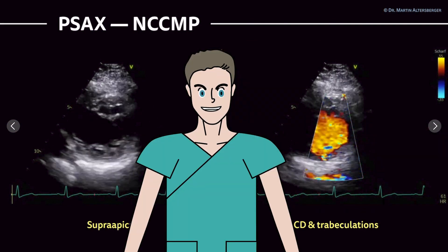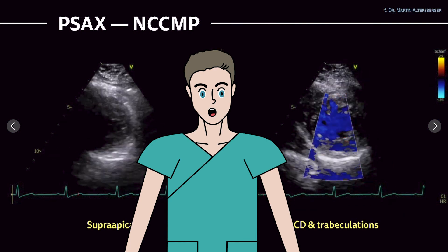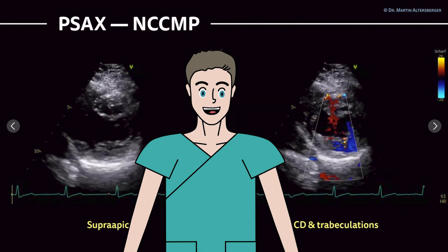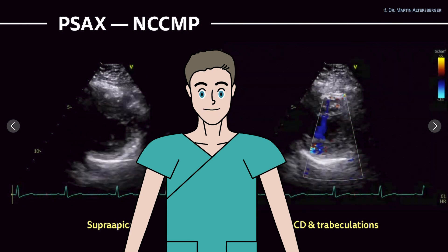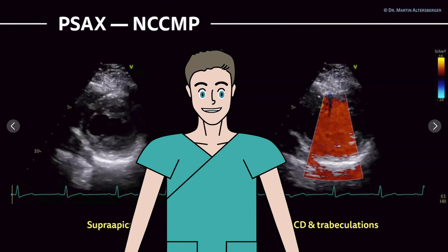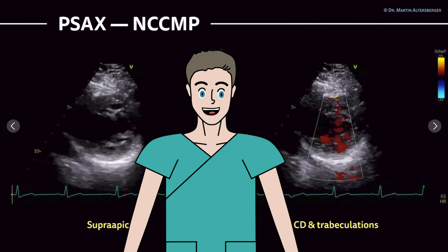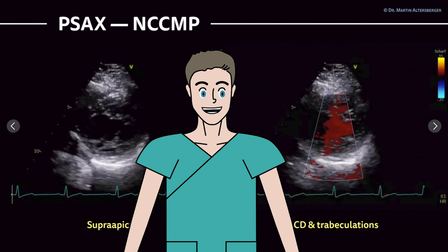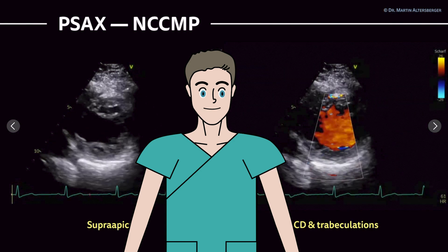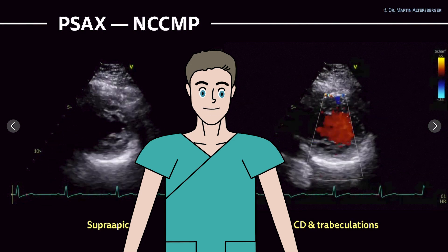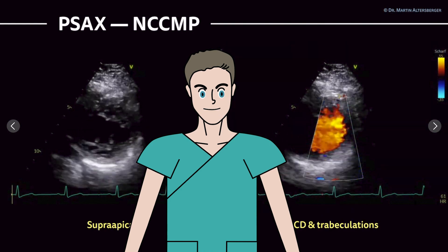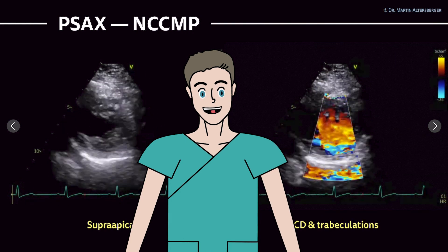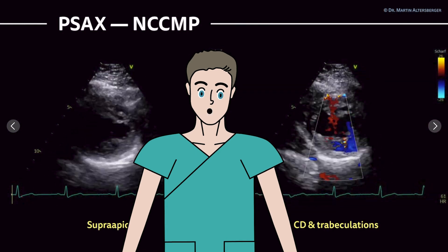This concludes the first part of pathological findings in the parasternal short axis view. We discussed the opening of the aortic valve, non-compaction cardiomyopathy, left ventricular function, and various regurgitations including tricuspid and aortic regurgitation. In the next videos, we will focus on M-mode measurements, aortic stenosis in the parasternal short axis view, and continue with pulsed wave and continuous wave Doppler measurements.